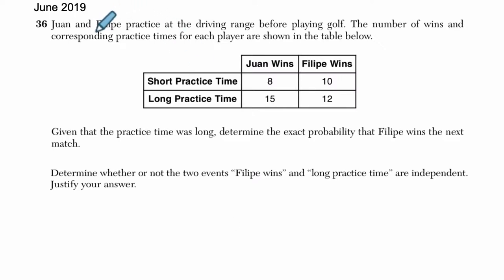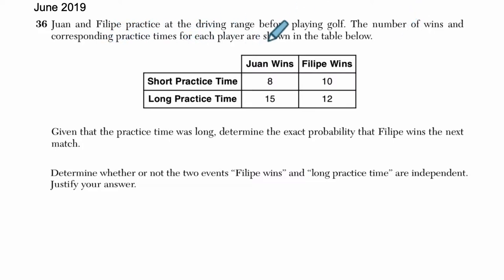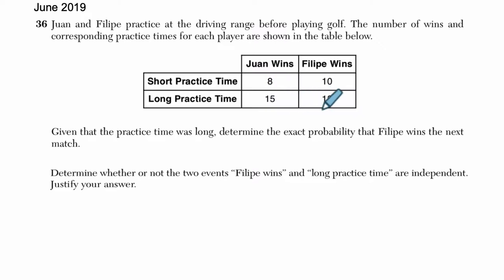So Juan and Felipe practice at the driving range before playing golf, so they're practicing for the game of golf. The number of wins and corresponding practice times for each player are shown in the table below. We have a two-way frequency table. We've got Juan's wins here in the first column, Felipe's wins in the second column, and then we have short practices and long practices in these two rows right here.